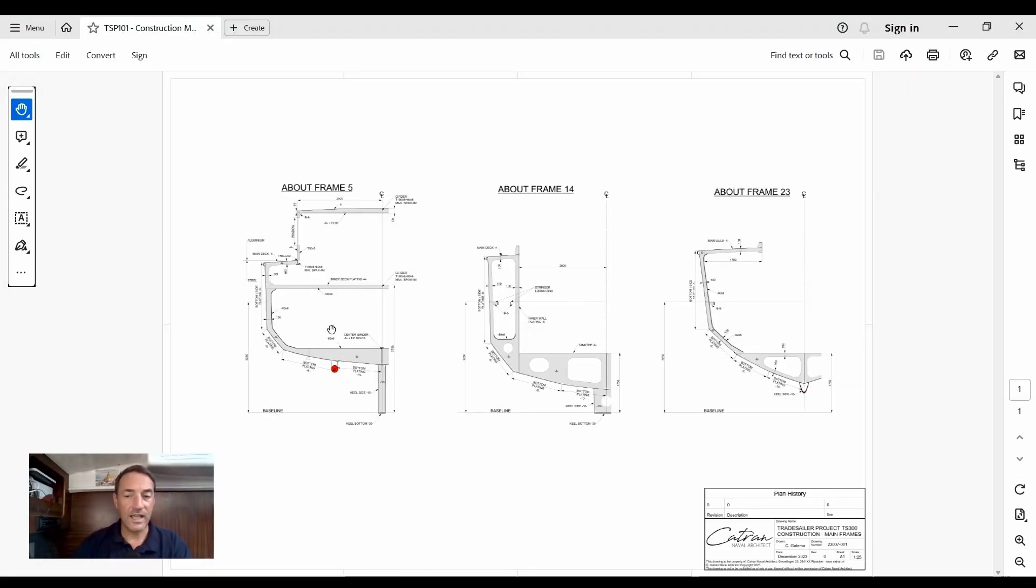Let's have a look at the mainframe drawing. I've selected three sections through the ship: one at the accommodation, one at the cargo hold, and one at the forward cargo hold. This will give me enough coverage to determine the average plating to stiffening ratios for all the plating.